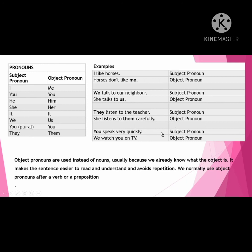You speak very quickly — 'you' is a subject pronoun. We watch you on TV — 'you' is an object pronoun. Object pronouns are used instead of nouns, usually because we already know what the object is. It makes the sentence easier to read and understand and avoids repetition. We normally use object pronouns after a verb or preposition.